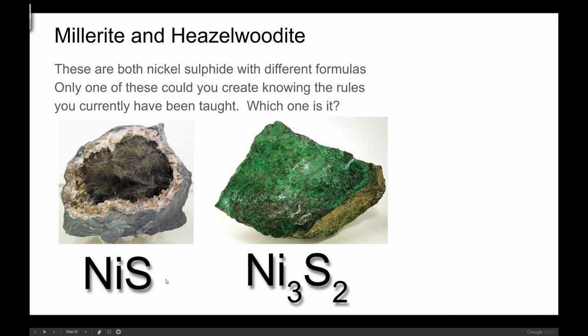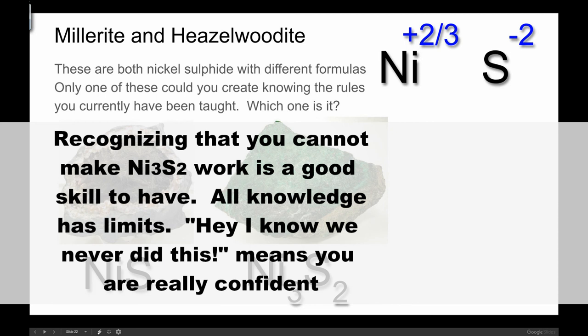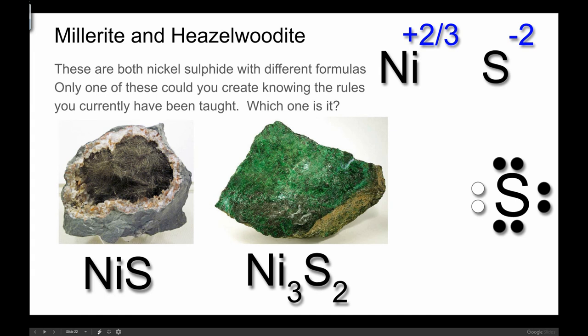Millerite and hazelwoodite. These are both nickel sulfide. This is nickel when it's in its plus two state and this would be, this is minus two I know that so this is minus two and there's two of them it's minus four. Oh dang. How, what times three is four. Which one of these can you do and which one can you not. Well you can only do one of these.